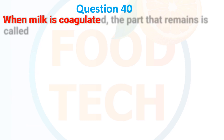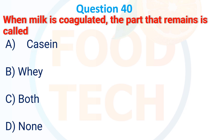Question 40. When milk is coagulated, the liquid part that remains is called: A. Casein. B. Whey. C. Both. D. None. The correct answer is B: whey.